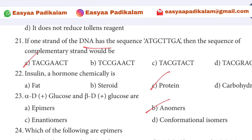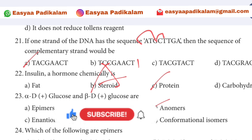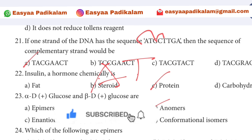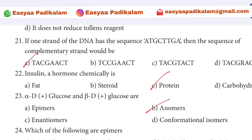21st question: If one strand of DNA has the sequence A, T, T, G — then the complementary strand will be T, A, C, G (opposite pairing). So the complementary sequence is T-A-C-G.